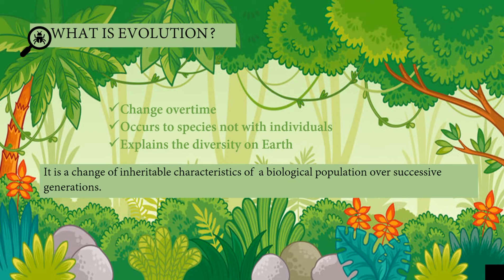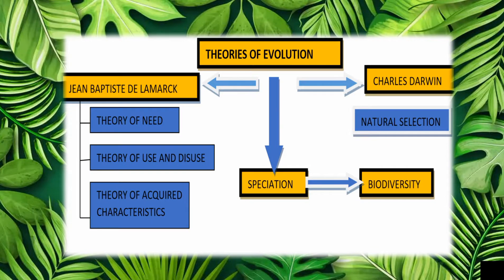That is why our Earth is so beautiful. We can see different kinds of plants, animals, and other living organisms. We have two well-known proponents under the theories of evolution: Jean-Baptiste de Lamarck, with his theory of need, theory of use and disuse, and theory of acquired characteristics; and Charles Darwin, with his natural selection.